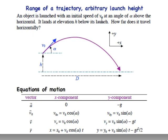So it's launched with an initial speed of v0 at an angle alpha above the horizontal. It lands at an elevation h below its launch. How far does it travel horizontally?